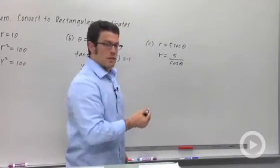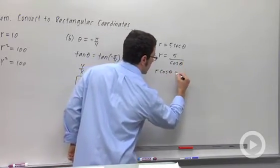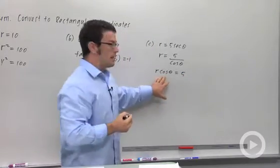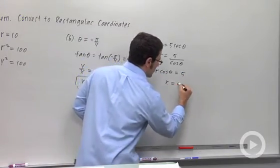So I multiply both sides by cosine, and I get r cosine theta equals 5. This is x. x equals 5.